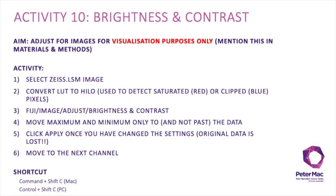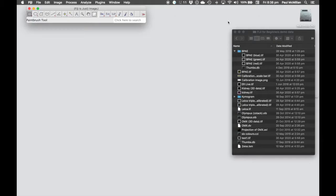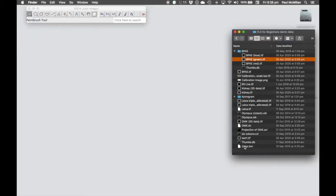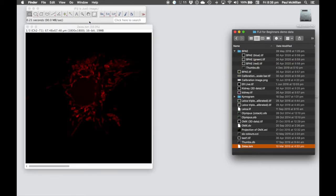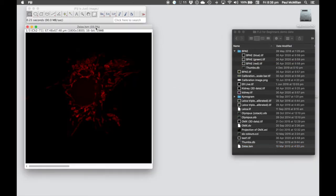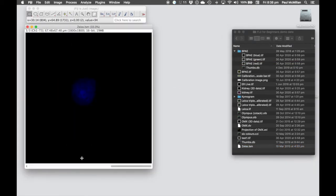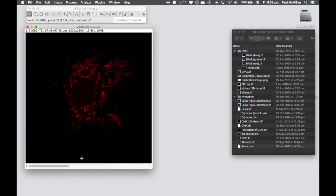Activity 10 is adjusting the brightness and contrast within an image. We're going to use this for visualization purposes only, just to make the data within the image a little bit clearer. For our example, we're going to use the zeiss.lsm image, which has three different channels.